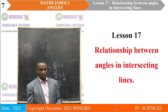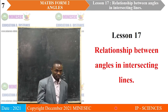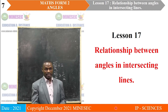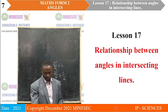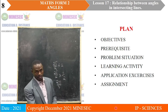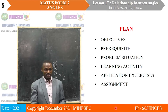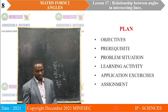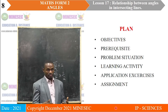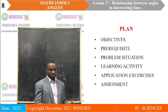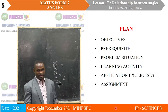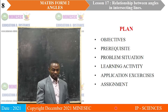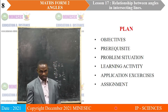The lesson proper is the first lesson: Relationship between Angles in Intersecting Lines. Here is a plan for the lesson. We will start with the objectives, prerequisites, problem situation, learning activity, application exercises, and end up with an assignment.